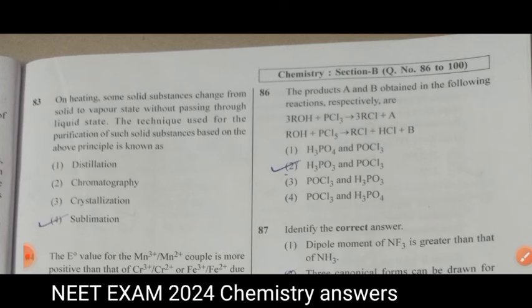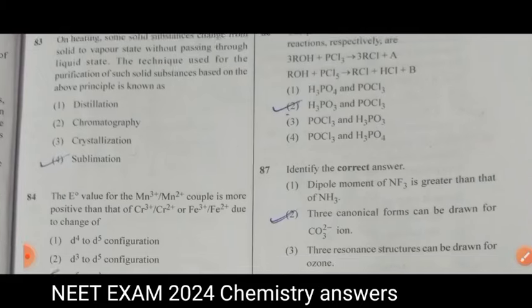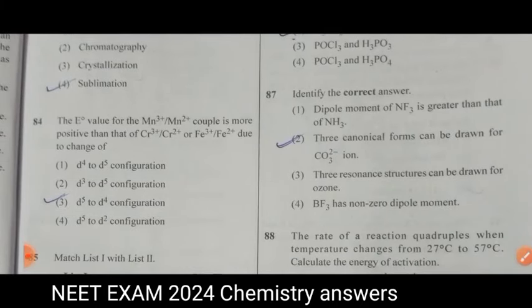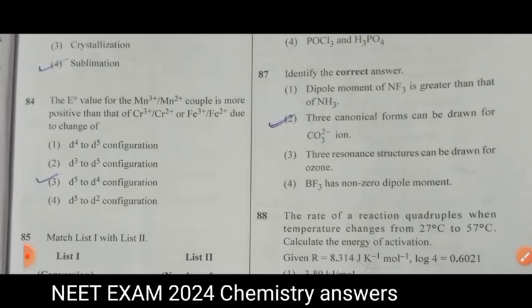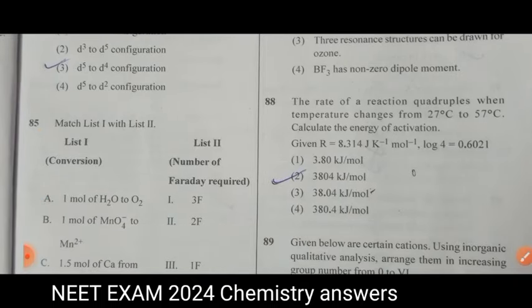Question 86, the products A and B. Answer is second one. Identify the correct answer. Question 87, answer is second one. Question 88, the rate of reaction. Answer is second one.